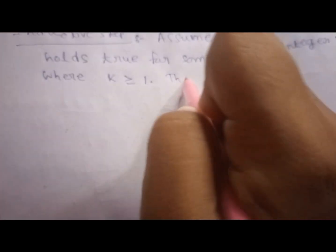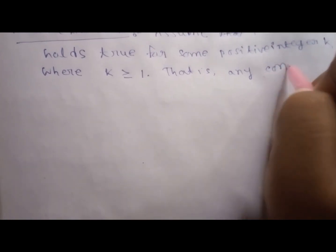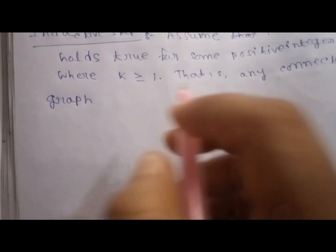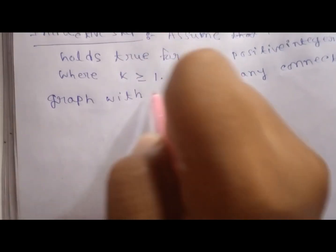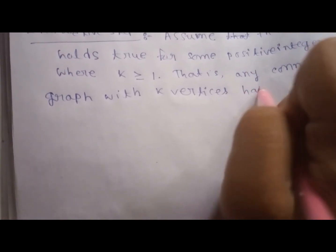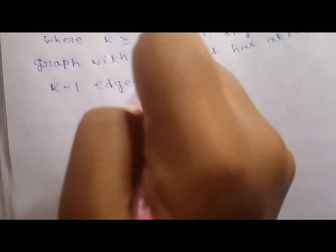That is, any connected graph with k vertices has at least k minus 1 edges. Now consider a connected graph with k plus 1 vertices.